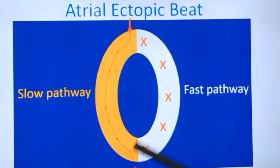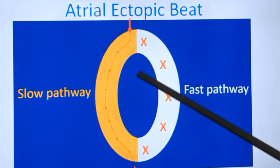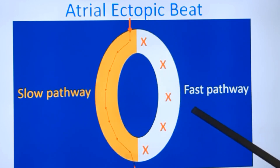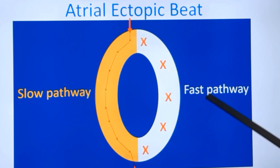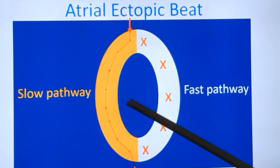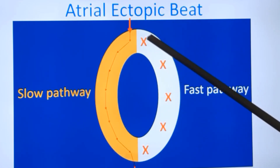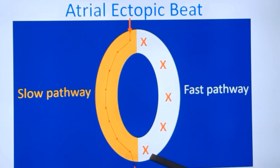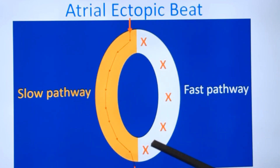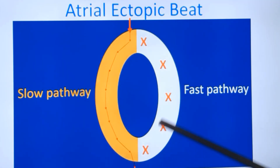So why does this occur? An atrial ectopic beat is conducted down the slow pathway. When an atrial ectopic beat which is premature comes, it finds that the fast pathway has become refractory after the previous sinus beat. The fast pathway, even though it conducts faster, has a longer refractory period, while the slow pathway, which conducts slowly, has a shorter refractory period. So it recovers fast, and when a premature beat comes, this is the only pathway which is active. Usually both pathways are active, but conduction will preferentially occur through the fast pathway. This is a manifestation of the dual AV nodal pathway physiology, manifested as a change in the PR interval.